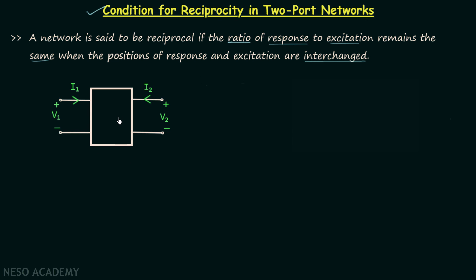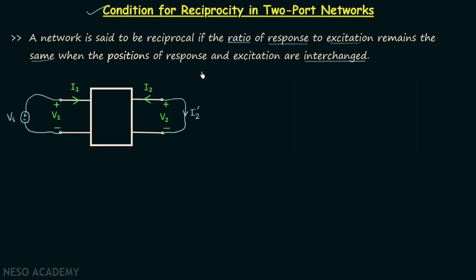We will excite this two-port network by the help of one voltage source, which I will connect between the two terminals of port number one. This voltage source provides voltage equal to Vs. So Vs is our excitation and the response is the current flowing after short-circuiting port number two. Let's say the current is I2'. So I2' is the response, Vs is the excitation, and therefore the ratio of response to excitation will be equal to I2' over Vs.